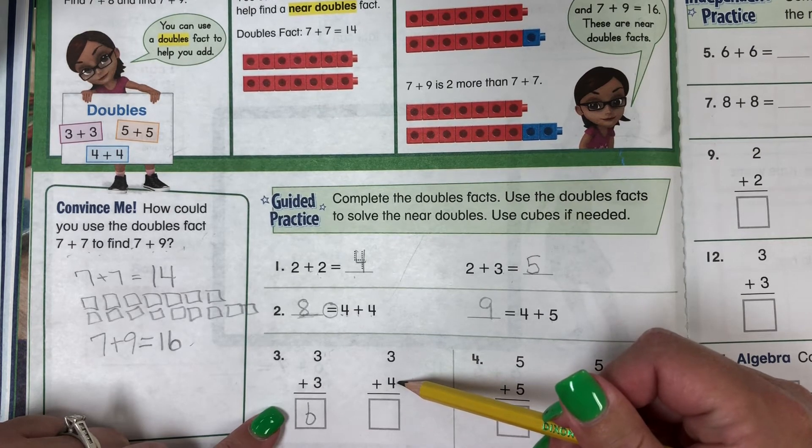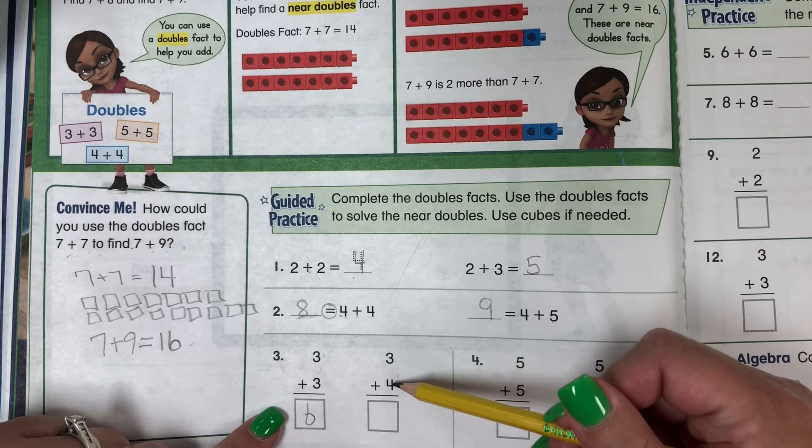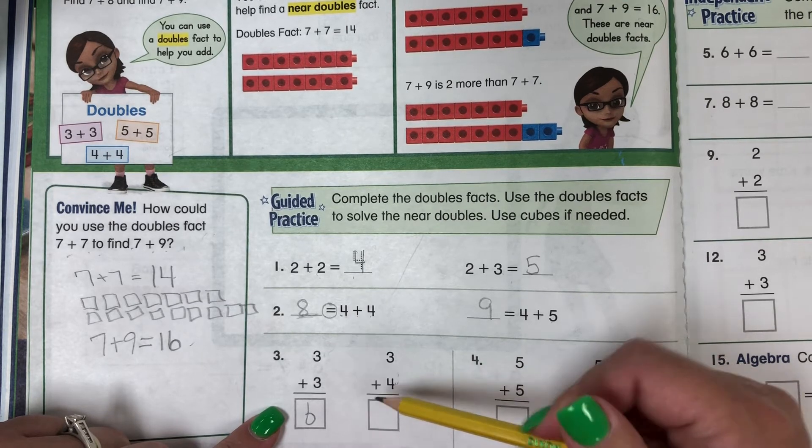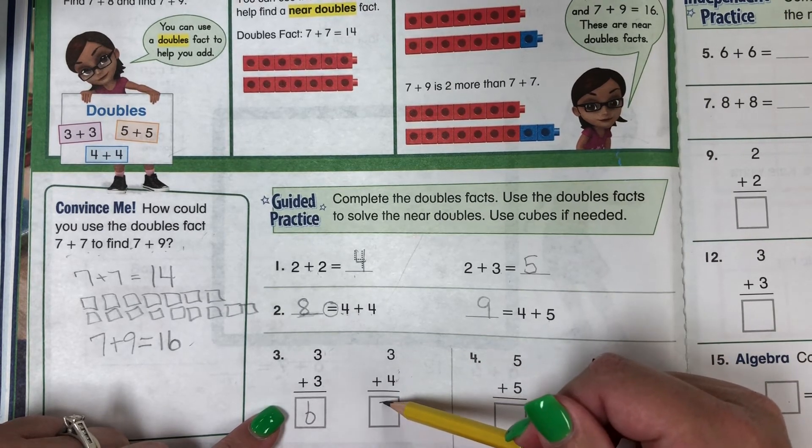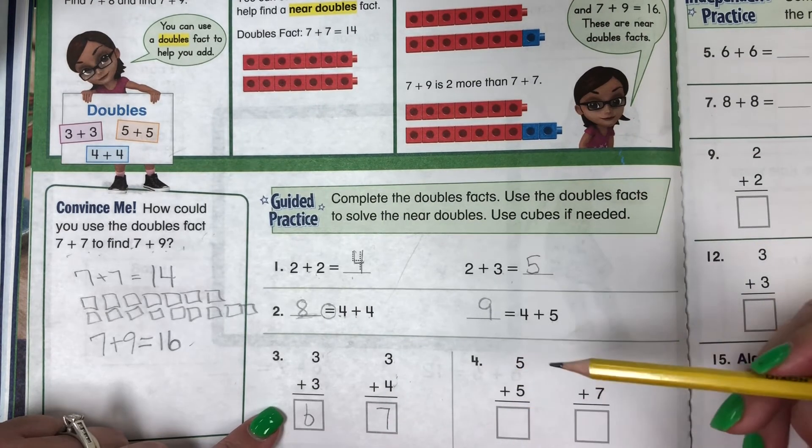4 is 1 more than 3. So we have 3 plus 4 is 1 more than 6, which is 7. Nice job.